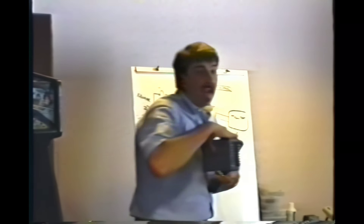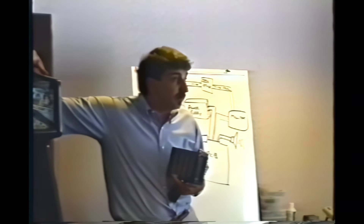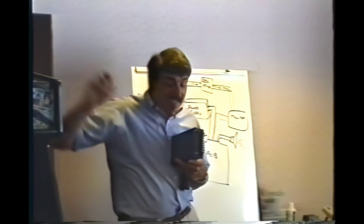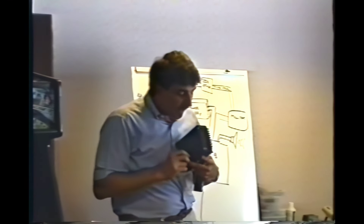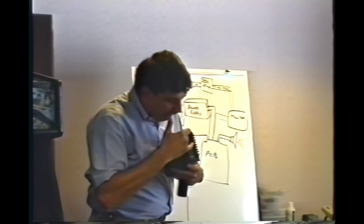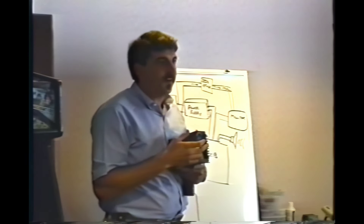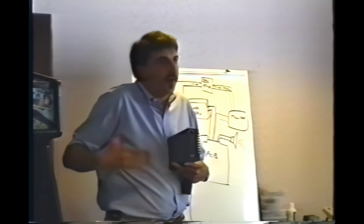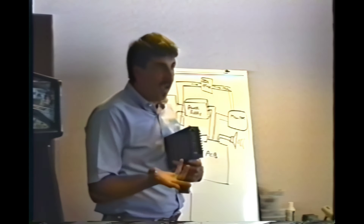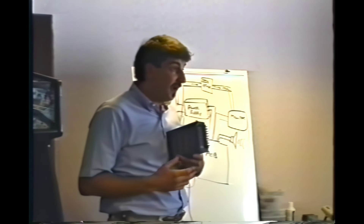So you get to the game, you coin it up, it doesn't do anything — you've got to assume your power supply is bad. The easiest thing to do is put your black meter lead on ground, the red meter lead on plus 5, and with the game turned on and powered up, you should read 5 volts DC there.